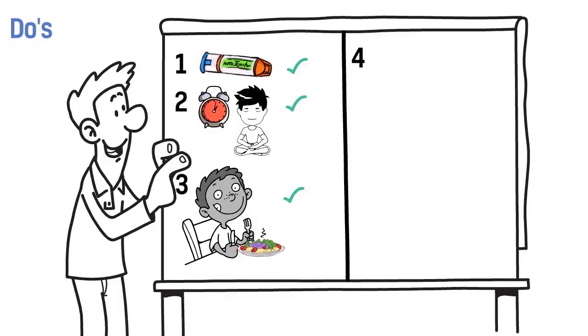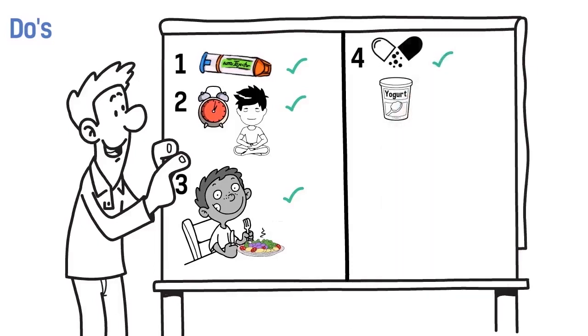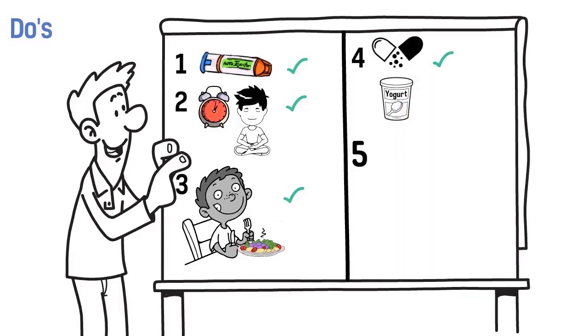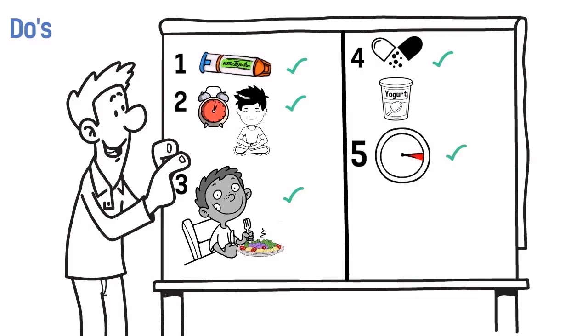4. Mix the medication into a cold or room temperature, soft food, like applesauce, yogurt, or pudding. 5. Watch your child for one hour after dosing.